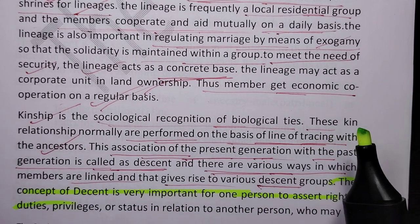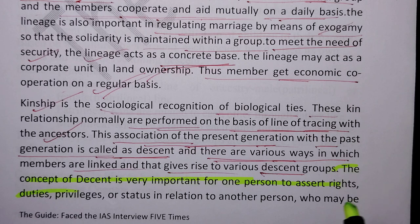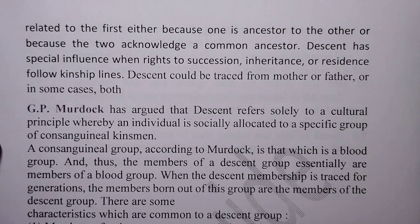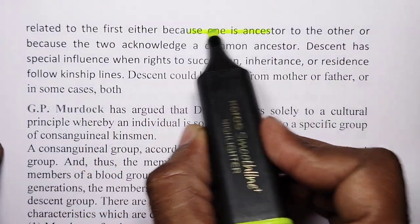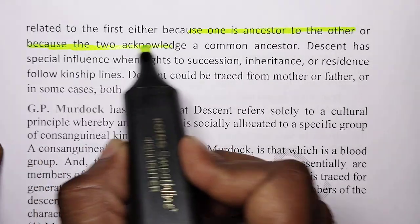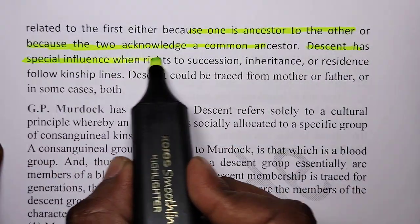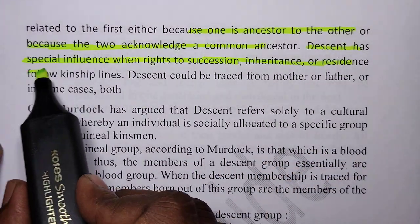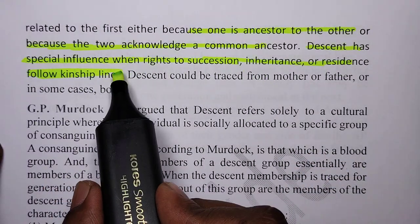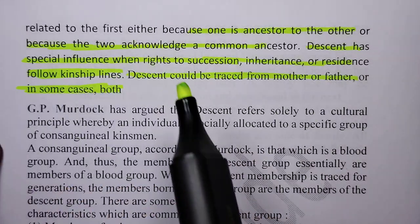The concept of descent is very important for one person to assert rights, duties, privileges, activities, and status in relation to another person who may be related to the first either because one is ancestor to the other, or because the two acknowledge a common ancestor. Descent has special influence when succession, inheritance, and residence follow kinship plans. Descent could be traced from mother or father, or in some cases both.